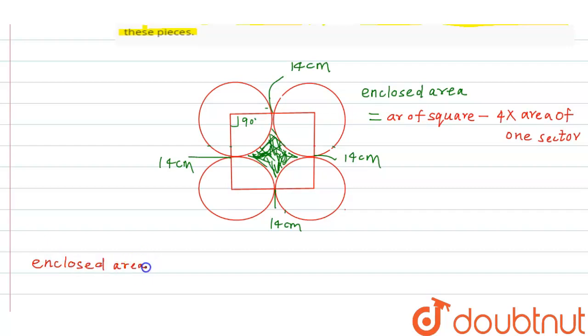minus 4 into—you know the angle subtended by the arc is 90 degrees—this is 90/360 into pi r squared, that is 22 by 7, and r squared, it means 14 squared.